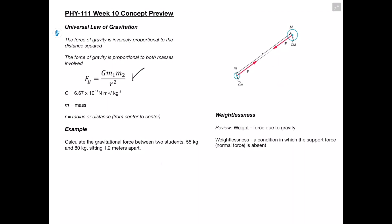We can see those relationships in this equation right here. Basically we see we have this constant here which we've defined. We see that m1 and m2 are going to be our masses, and r is going to represent our radius or the distance from the center of one object to the center of the other. We can see this equation in this diagram as well, where r is the distance between the centers of both masses.